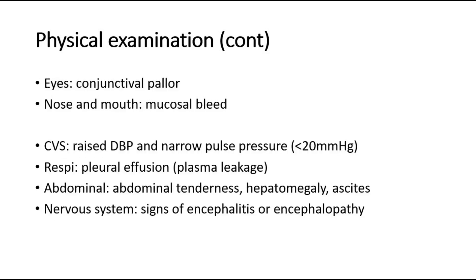For the eyes, look for conjunctival pallor, injected conjunctiva, or jaundice, which may suggest other differential diagnoses. For the nose and mouth, look for mucosal bleeding and gum bleeding. On systemic examination, cardiovascular examination looks for raised diastolic blood pressure and narrow pulse pressure. Respiratory examination looks for signs of pleural effusion due to plasma leakage in the critical phase. Abdominal examination checks for tenderness — a warning sign — as well as hepatomegaly and ascites, which suggests plasma leakage. For the nervous system, check for signs of encephalitis or encephalopathy.